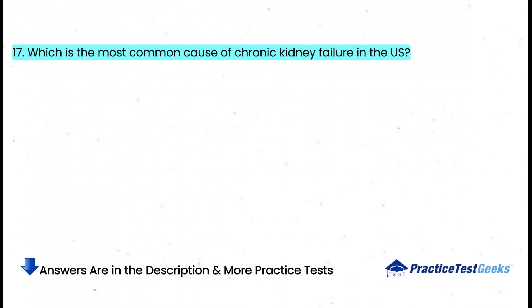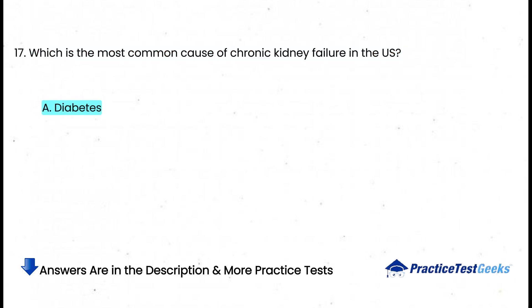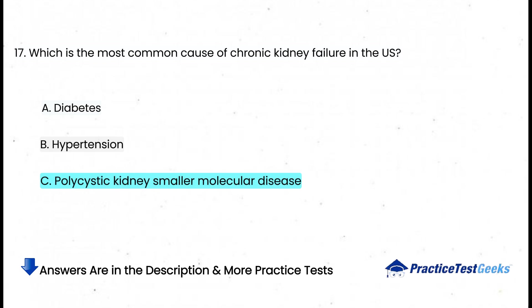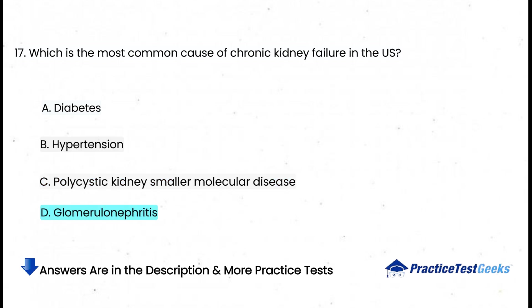Which is the most common cause of chronic kidney failure in the U.S.? a. Diabetes, b. Hypertension, c. Polycystic kidney disease, d. Glomerulonephritis.